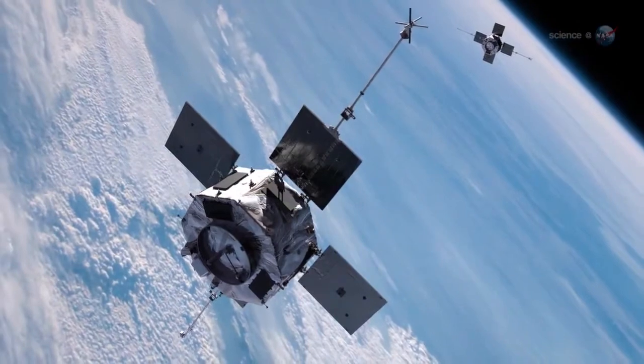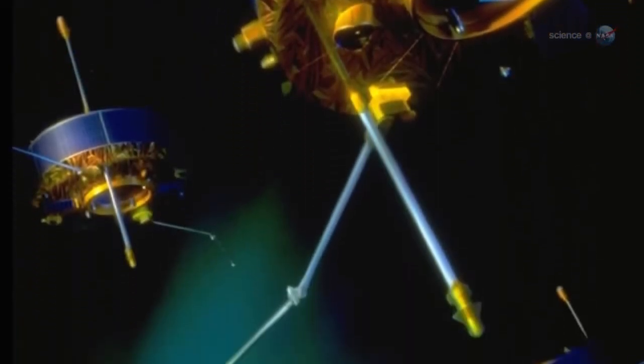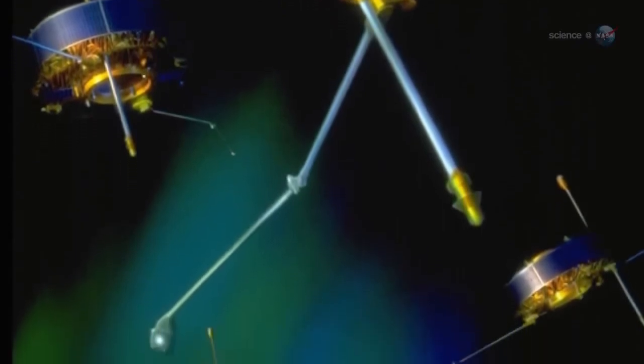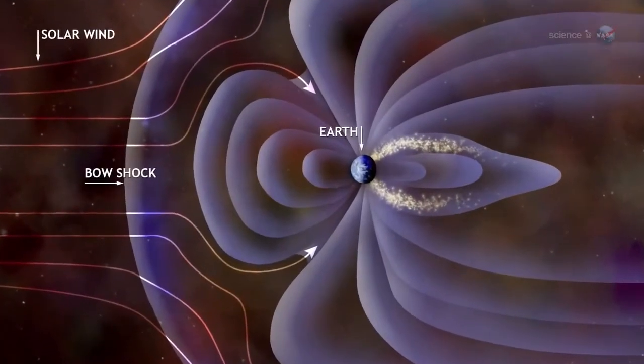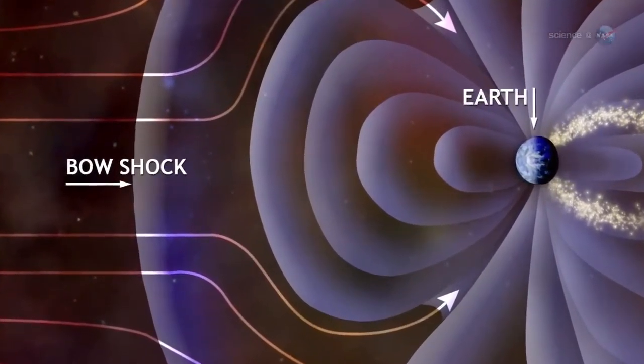Observations by NASA's Themis spacecraft and Europe's cluster probes suggest that these magnetic portals open and close dozens of times each day. They're typically located a few tens of thousands of kilometers from Earth, where the geomagnetic field meets the onrushing solar wind.